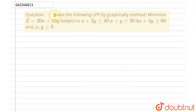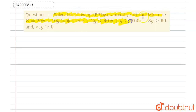The question says: solve the following linear programming problem by graphical method. Minimize z equals to 20x plus 10y, subject to x plus 2y less than or equal to 40, x plus y greater than or equal to 30, 4x plus 3y greater than or equal to 60, and x, y greater than or equal to 0.